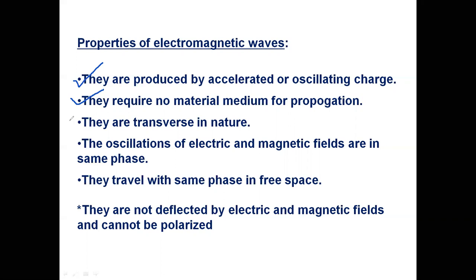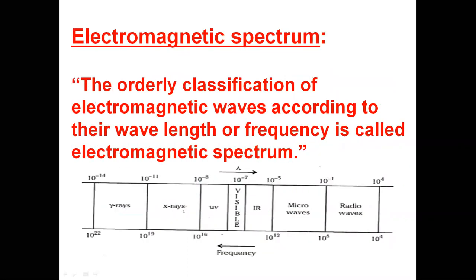Electromagnetic waves are transverse in nature — the oscillations of the electric and magnetic fields are in the same phase. They travel with the same phase in free space. They are not deflected by electrical and magnetic fields and cannot be polarized. These are the important properties you have to understand.